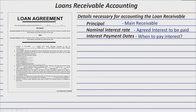The interest payment dates are the schedules for collection of interest. It can be annually, semi-annually, quarterly, or monthly. But if the problem is silent, then interests are considered collected at the end of each year. Those are three details you might extract from the loan agreement.